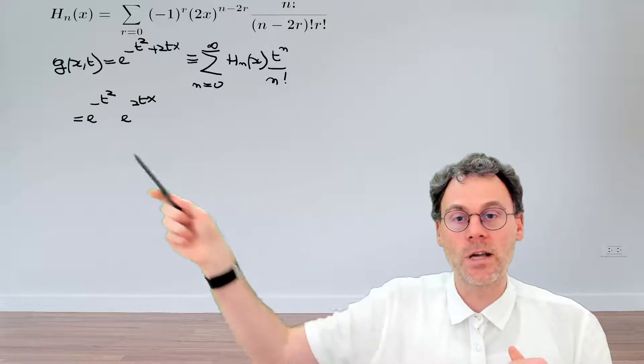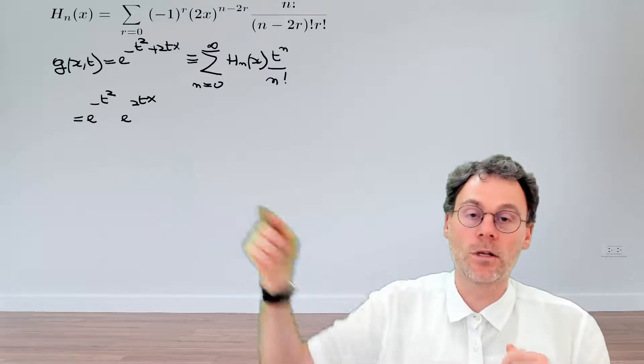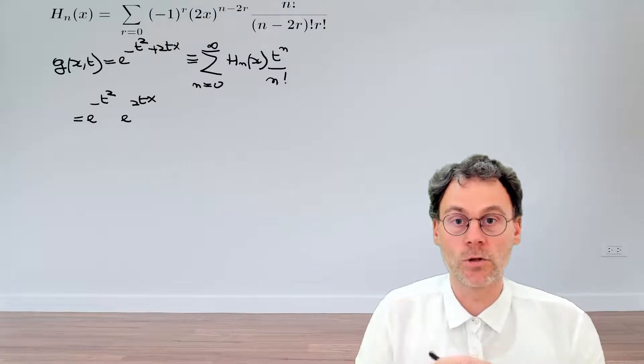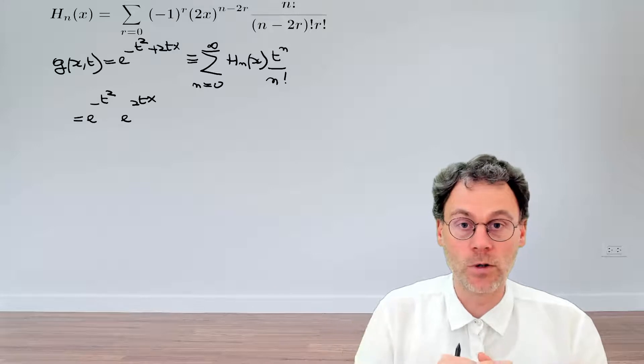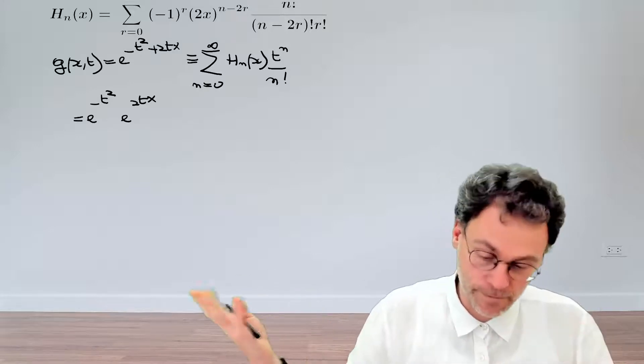And then for each of these exponentials, we're going to write down its series expansion and then rearrange terms such that we have an explicit formula for the coefficient of t to the power of n. And once we have that, then we're in business.